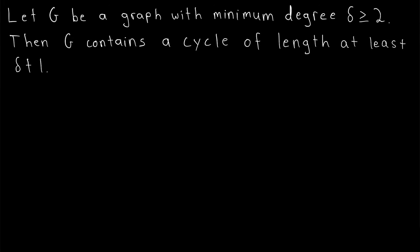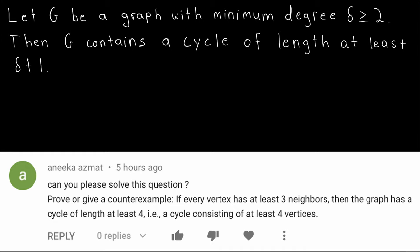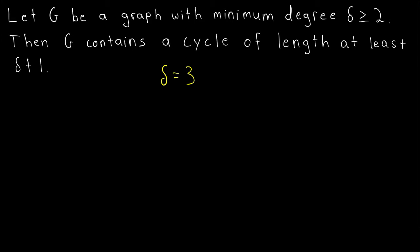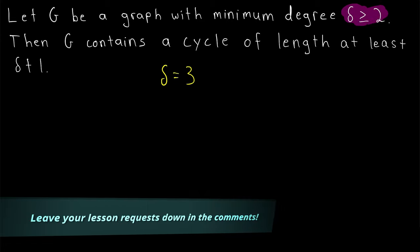How big of a cycle must any graph contain? Well, if the graph G has a minimum degree delta that's greater than or equal to 2, then it must contain a cycle of length at least delta plus 1 — a length at least 1 greater than the minimum degree of the graph. That's what we'll be proving in today's Wrath of Math lesson. This is a viewer-requested video; the question was specifically about a graph with minimum degree equal to 3, but we're proving the result in general for all minimum degrees that are at least 2.